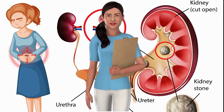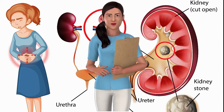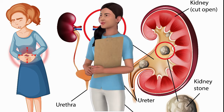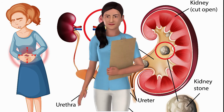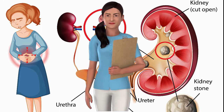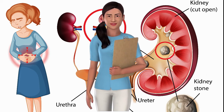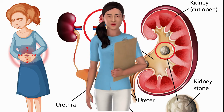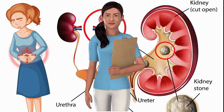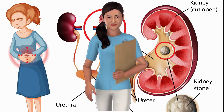Cysteine stones are the rarest type you can develop. They occur in both women and men who suffer with a cystinuria disorder. They are made from cysteine acid which leaks out from the kidneys into the urine.